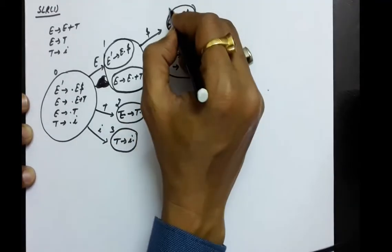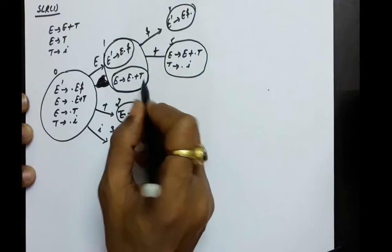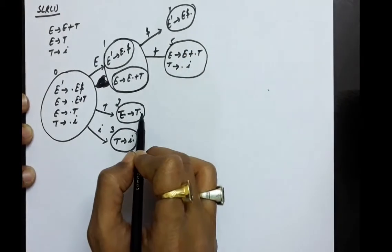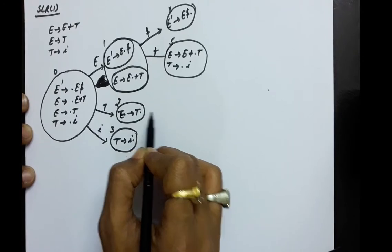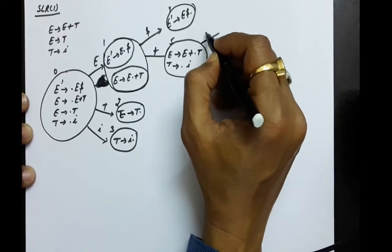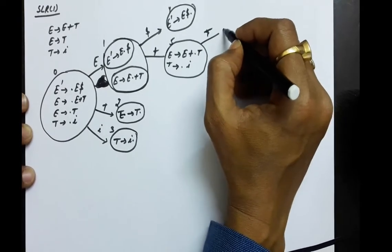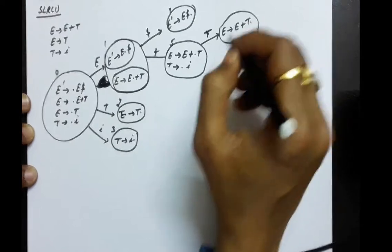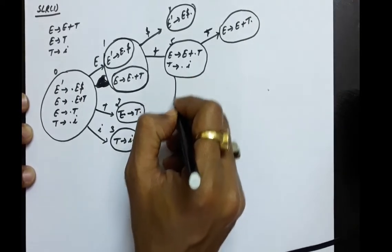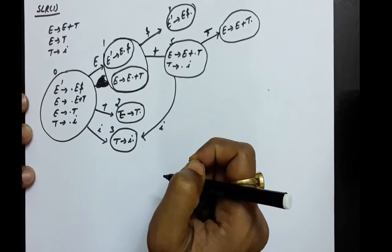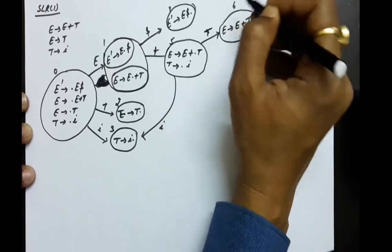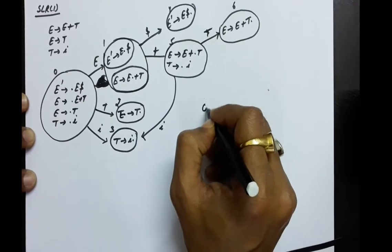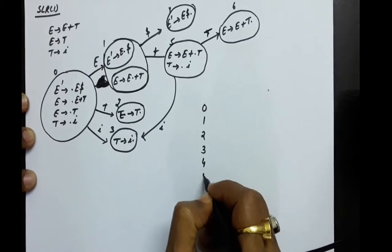Let's number the states: 1, 2, 3, 4, and 5. We have taken a dollar transition and a plus transition. There will be no transition from states 2, 3, and 4. Now we take a transition from state 5, and the transition symbol is capital T. So E → E+T. — that leads to a new state. And if we take an i from state 5 we go to state 3. So this new state is numbered 6.